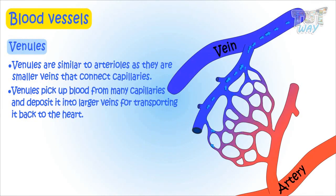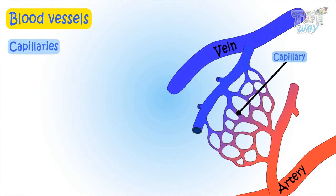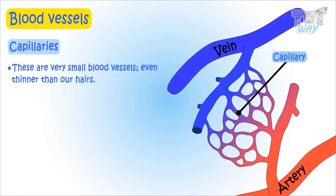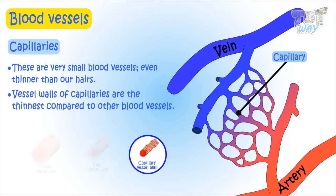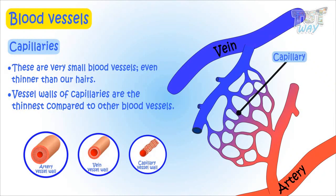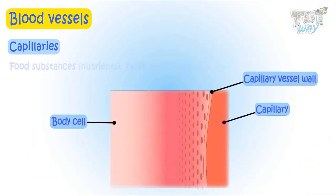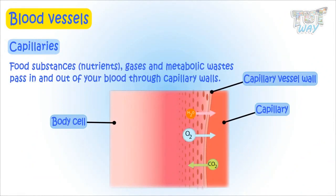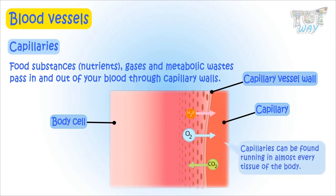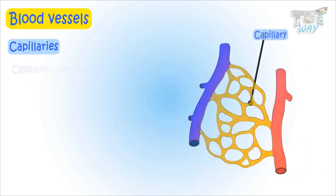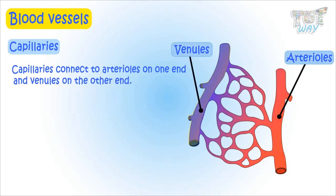Capillaries are very small blood vessels, even thinner than our hairs. The vessel walls of capillaries are the thinnest compared to other blood vessels. Capillaries connect arteries and veins. Food substances — that is, nutrients — gases such as oxygen and carbon dioxide, and other metabolic wastes all pass in and out of the blood through these capillary walls. Capillaries can be found running through almost every tissue of the body, connecting to arterioles on one end and venules on the other end.